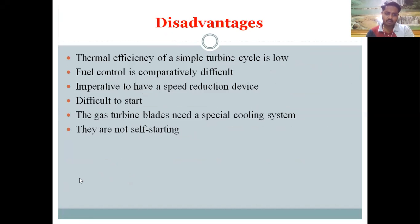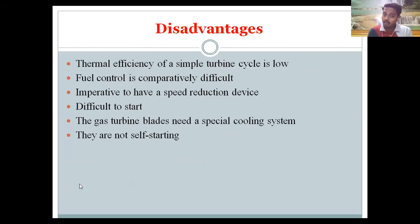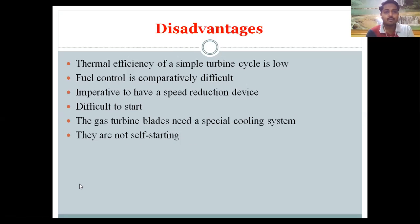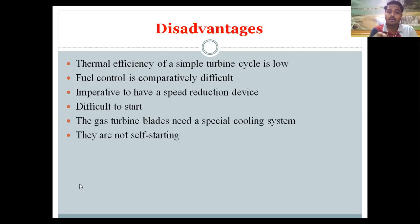Now for the disadvantages: the thermal efficiency of a simple turbine cycle is low — only 15 to 20 percent — compared to an IC engine which has a thermal efficiency of 25 to 30 percent. Keep in mind that while the mechanical efficiency of the gas turbine power plant is higher than the IC engine, the thermal efficiency of the simple gas turbine cycle is lower.